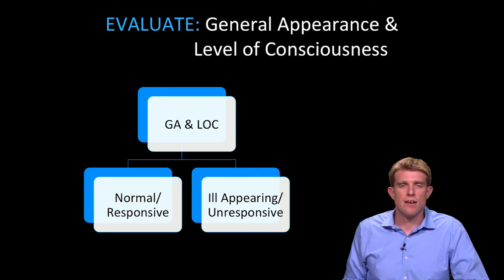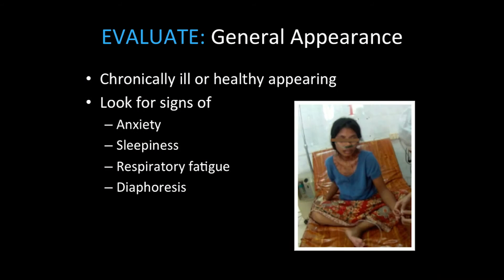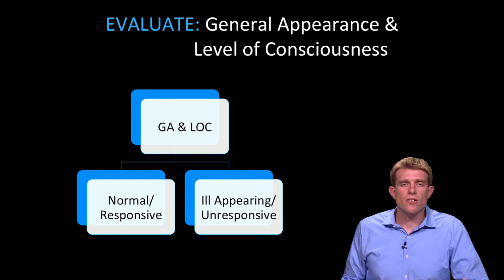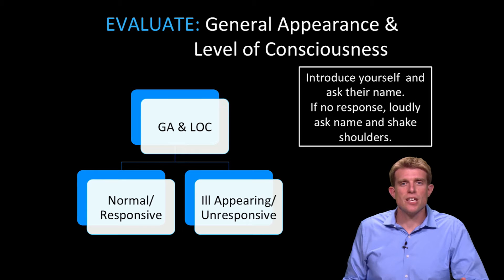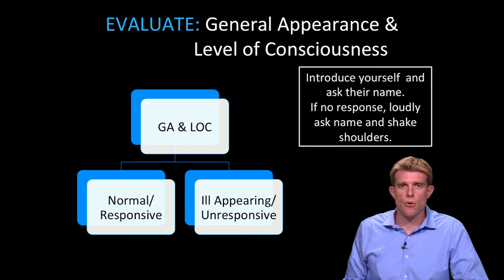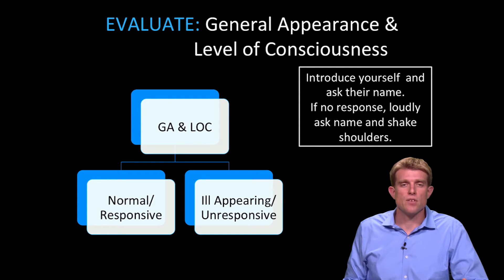When I look at their general appearance and level of consciousness, what I'm trying to determine is are they ill-appearing or do they have an altered mental status? I try to decide does the patient look chronically ill or do they look generally healthy at baseline. And then I look for signs of things like anxiety, sleepiness, respiratory distress or fatigue, and sweatiness. When I look at their level of consciousness, the fastest way to do that is to actually introduce yourself — say something like, 'Hello, my name is Dr. Strelow, what's your name?' If the patient responds appropriately, you have a pretty good understanding of their mental status. If they don't respond appropriately, then you do some kind of noxious stimuli, like shaking their shoulders or doing a sternal rub to assess if they're responsive to painful stimuli.